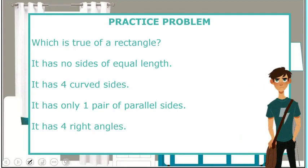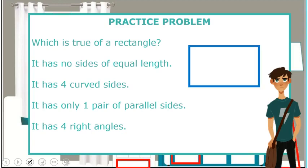Let's check out this practice problem. It says, which is true of a rectangle? Well, let's visualize a rectangle first. The first answer choice says it has no sides of equal length. Well, that's not true because this side and this side are equal, then this side and this side are equal.